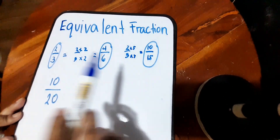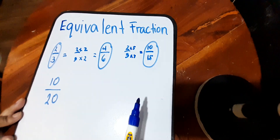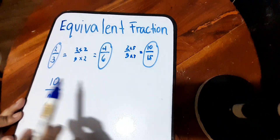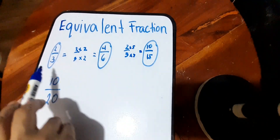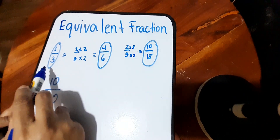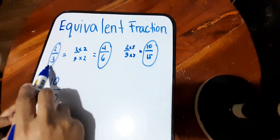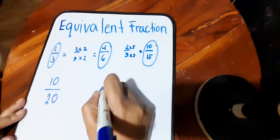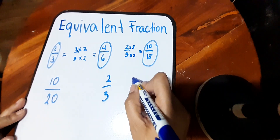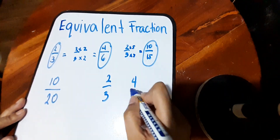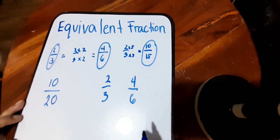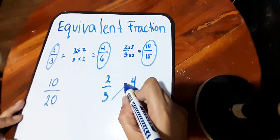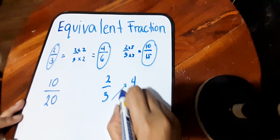For you to know if two fractions are equivalent, you just need to cross multiply. For example, two-thirds and four-sixths — we want to know if they are equivalent. One way of checking is you cross multiply.